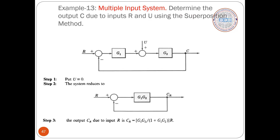In this example we have two inputs and one output. You have all heard of the superposition theorem. If a system is linear and two inputs are applied, you can calculate the effect of each input separately and add those effects to get the final output. So I have input R and input U. For this block diagram, I consider one input at a time, calculate the response, and add the two responses to get the final output.